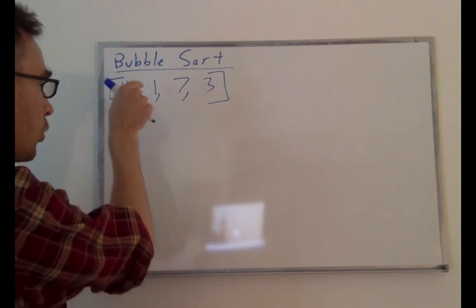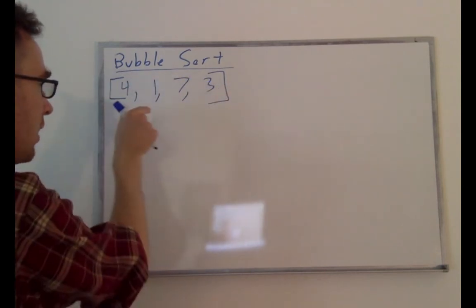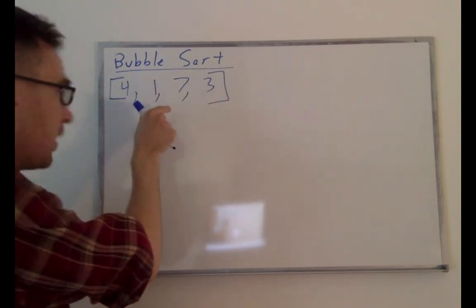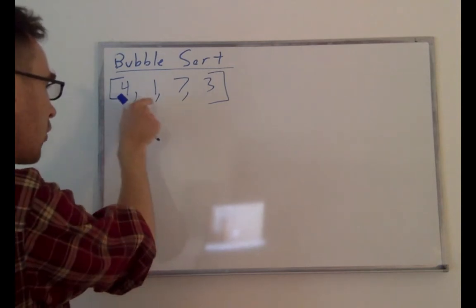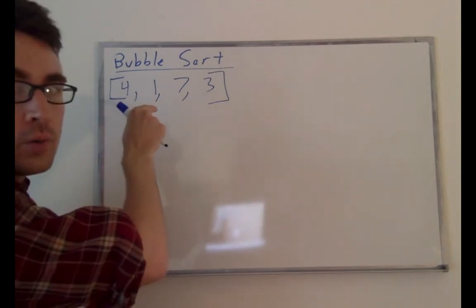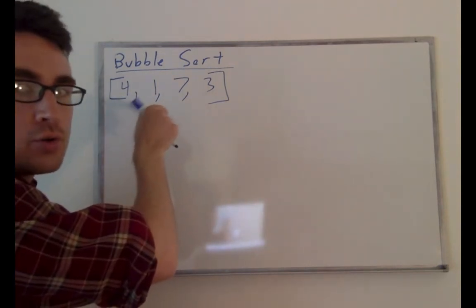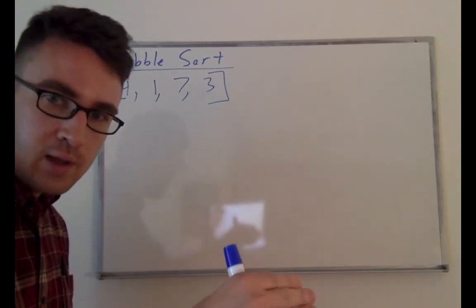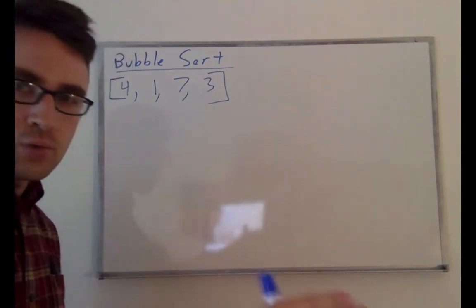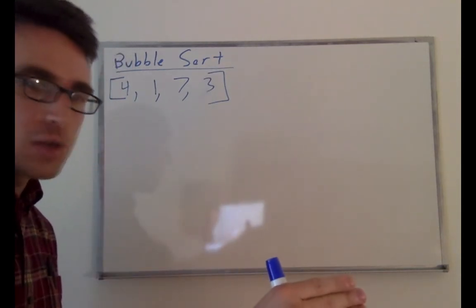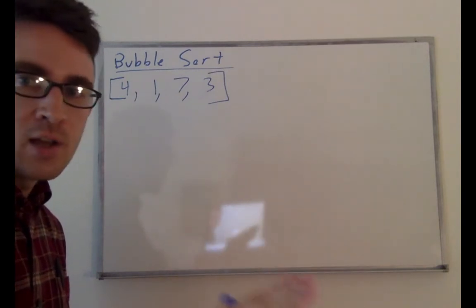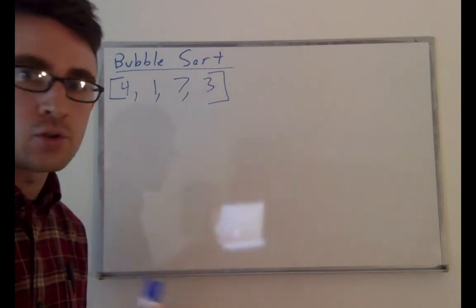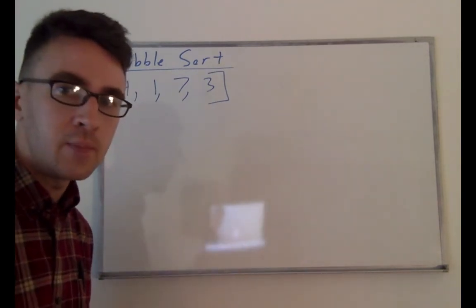So we're going to iterate through the array. At each point, we're going to compare two numbers and see if they're already in order. If they're not in order, we're going to switch them. And we're going to keep iterating through the array until we get a pass through the array that doesn't require any swaps. At that point, we'll know that we're done because we'll already be in the right order.